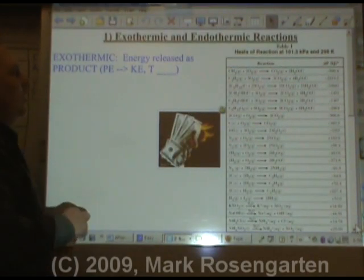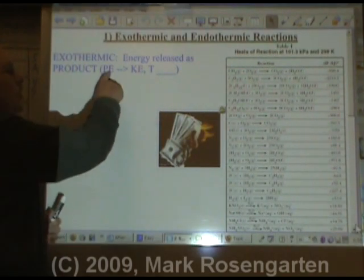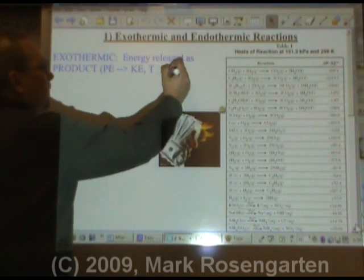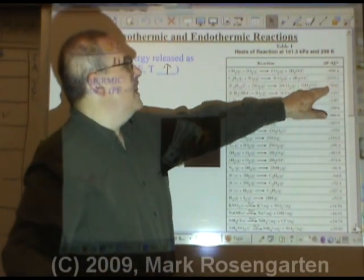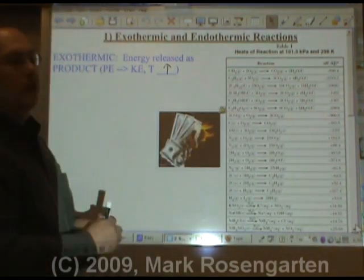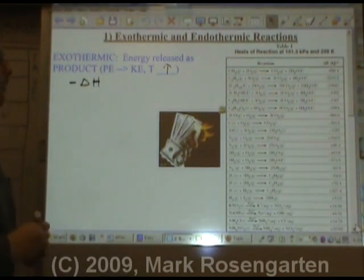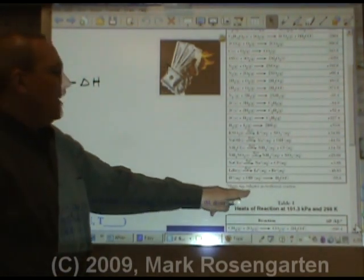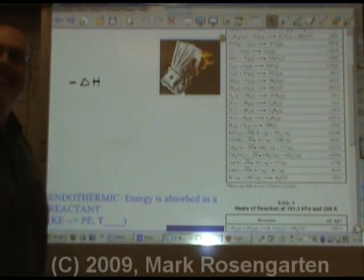In an exothermic change, energy is released as a product. Because potential energy is converted into kinetic energy, the temperature increases. You can tell if a reaction is exothermic if it has a negative delta H on reference table I. You don't have to memorize this — you can go to the bottom of reference table I and it says minus sign indicates an exothermic reaction.